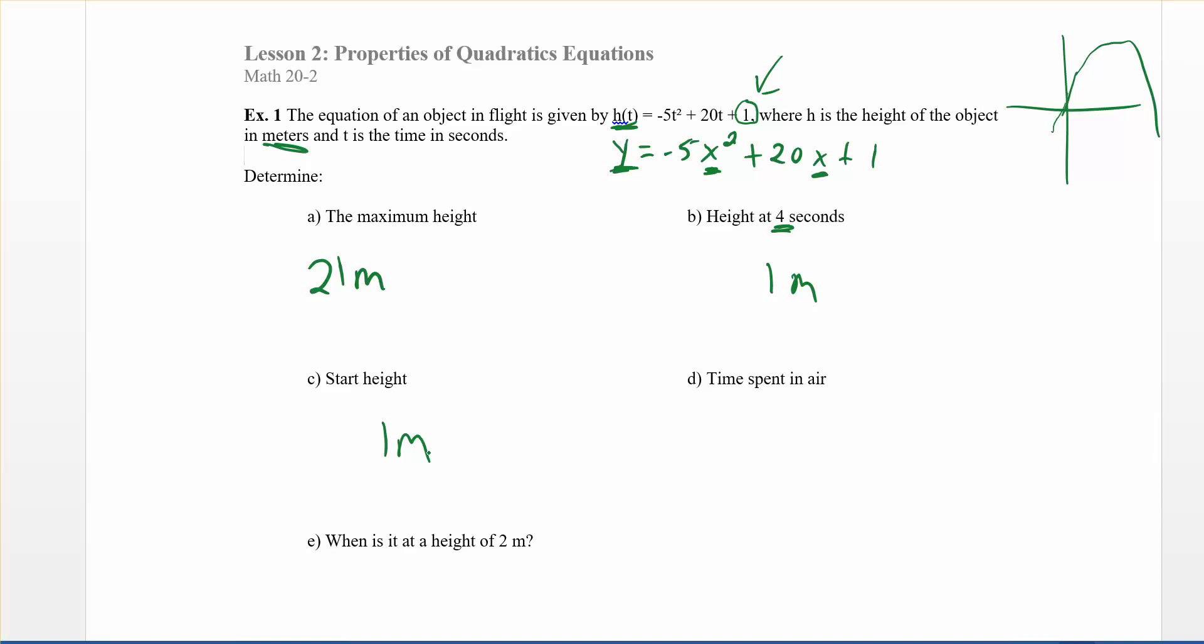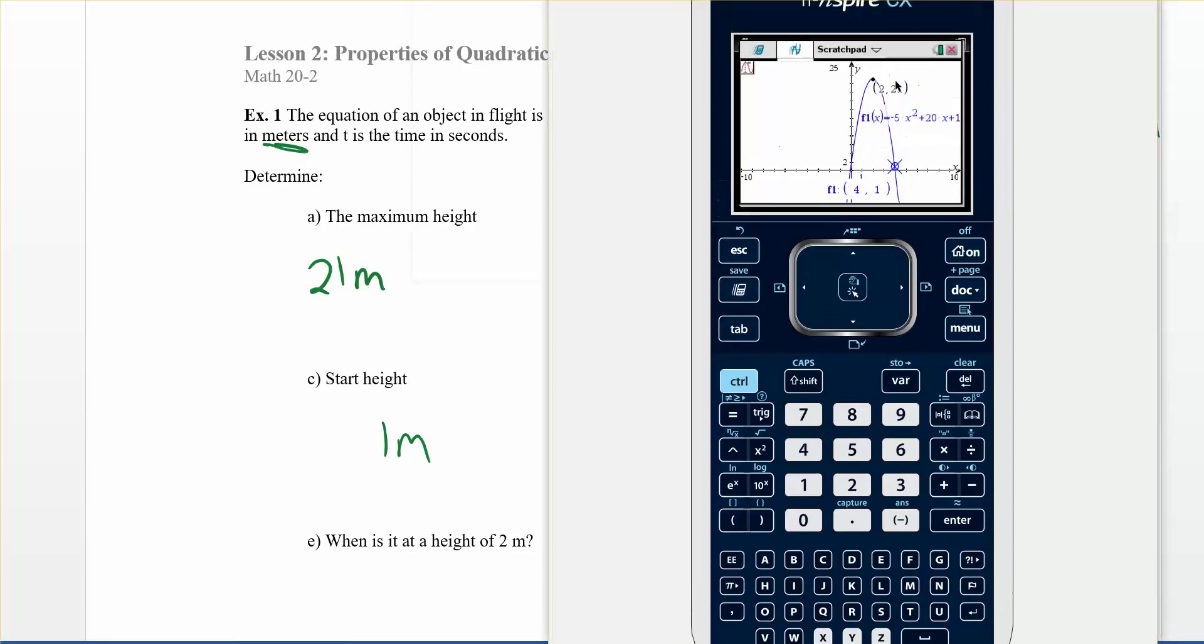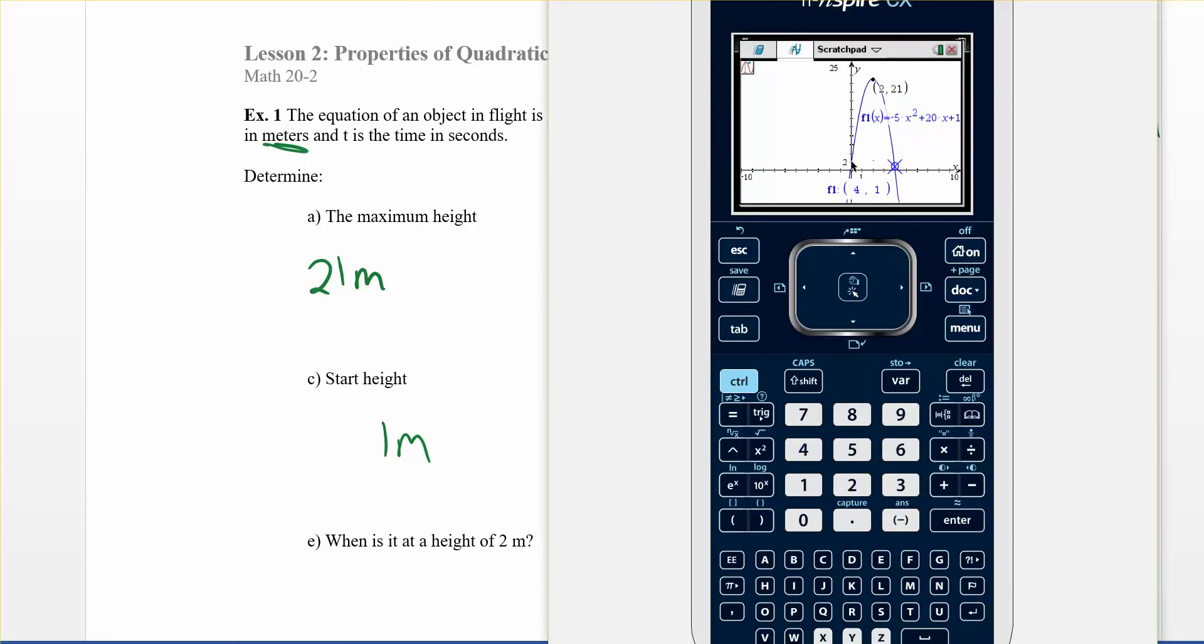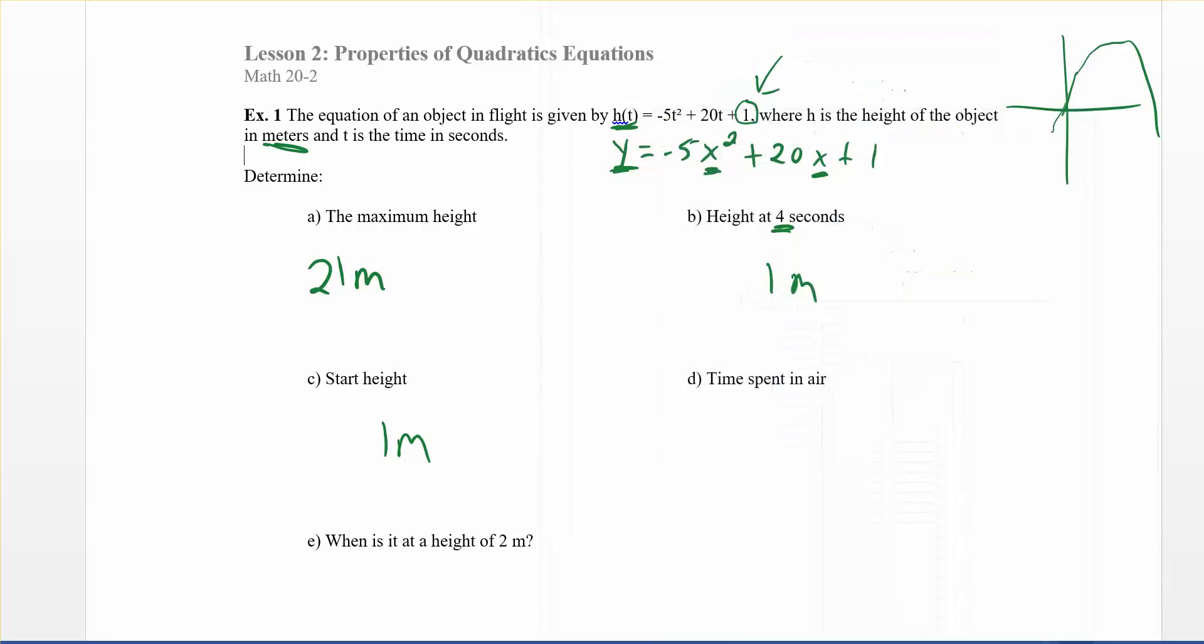The other way you could find that if you just weren't even sure about that is what's the x value there? The x value is zero. So if I wanted to figure out the y value with that, I'd go menu, trace, trace graph. And then I'm just going to put zero. So I'm going to say when x is equal to zero, what is y? It's equal to one. It shows right there, right? Zero, comma, one. All right. So we got that one. Start height.